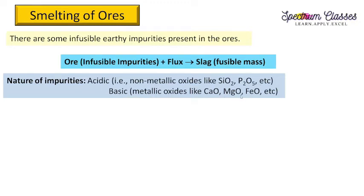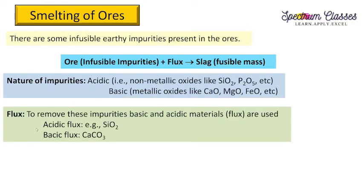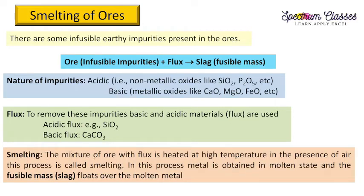Acidic impurities include non-metallic oxides like silica and phosphorus pentoxide. Basic impurities include calcium oxide, magnesium oxide, and iron. To remove acidic impurities, a basic flux is used, and for basic impurities, an acidic flux is used. The mixture of ore with suitable flux is heated at high temperature in the presence of air — this process is called smelting. The metal is obtained in molten state and the fusible mass is called slag, which floats over the molten metal.